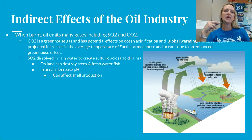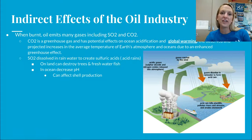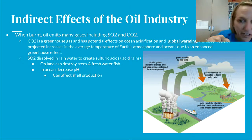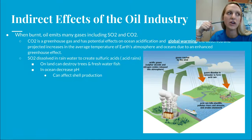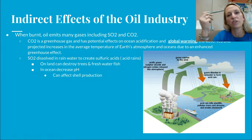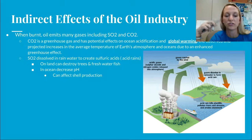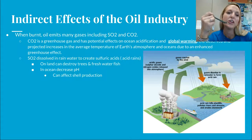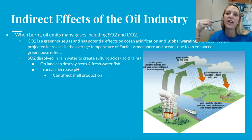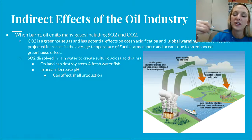The indirect effects of the oil industry: when burnt, oil emits sulfur dioxide and carbon dioxide. CO2 is a greenhouse gas that leads to ocean acidification as carbon dioxide dissolves into ocean layers, creating carbonic acid. It also contributes to global warming. Global warming is the observed and projected increase in average temperatures of Earth's atmosphere and oceans due to the enhanced greenhouse effect. Sulfur dioxide dissolves in rainwater to create sulfuric acid, forming acid rain, which on land destroys trees and freshwater fish, and in the ocean decreases pH, affecting shell production.